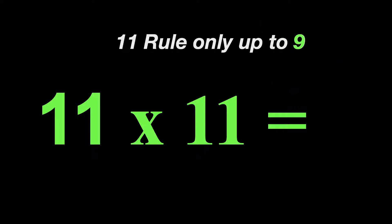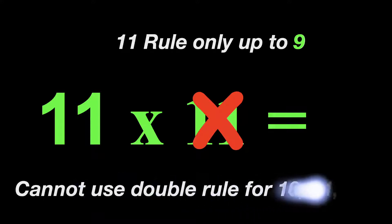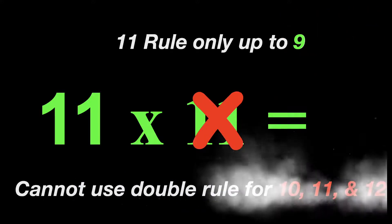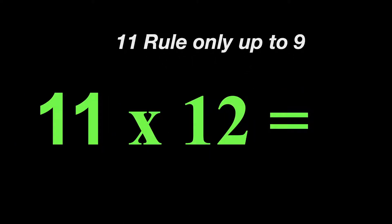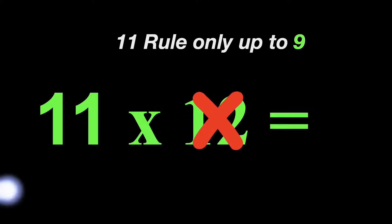So can we do 11 times 11? No, it will not work for 11. We cannot use the double rule for 10, 11, and 12. So could we do 11 times 12 using the double rule? No, only up to 9. We can't do 12.